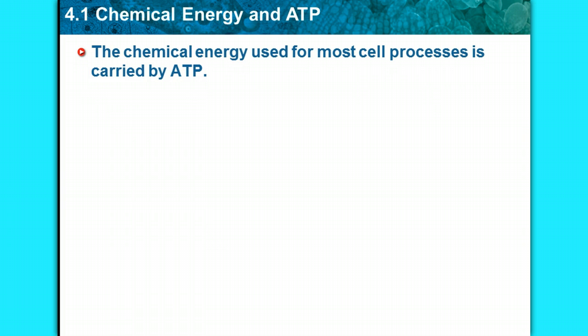The chemical energy used for most cell processes is carried by the molecule known as ATP, or adenosine triphosphate — three phosphates are involved in this.